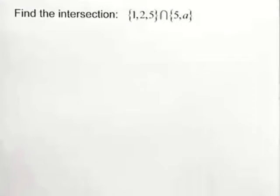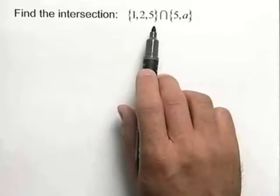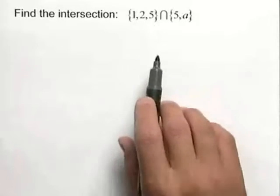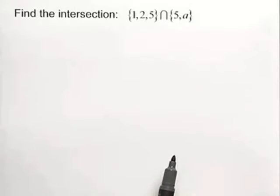Here is an example of set operations. We're taking the intersection of two sets. We have one set: 1, 2, and 5. Intersect that with 5 and A.